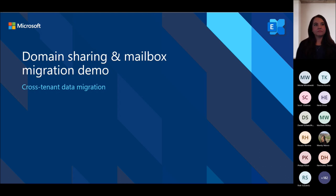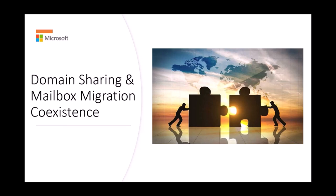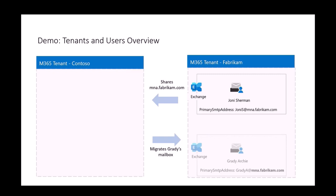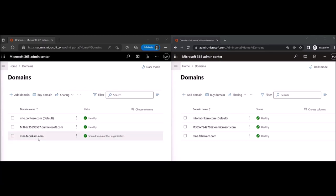Let us know if you can hear the sound. We will show you a demo on domain sharing and mailbox migration coexistence. Fabrikam acquires Contoso. On day one, Contoso users need Fabrikam branding — to achieve that, Fabrikam needs to share its Fabrikam domain with Contoso. We have a user named Joni Sherman in the Fabrikam tenant and a user named Grady Archie in the Contoso tenant. Grady is assigned an email address with the Fabrikam domain. We have set up the shared domain, which is mna.fabrikam.com.